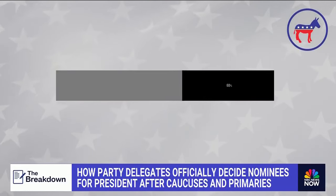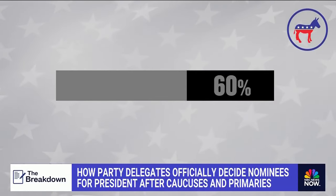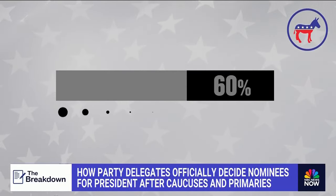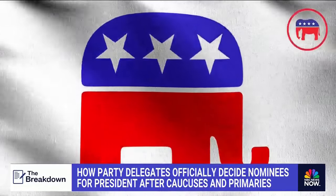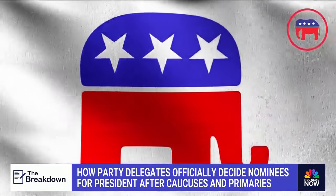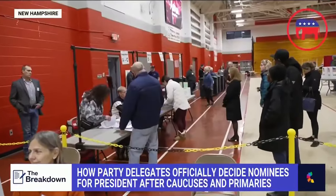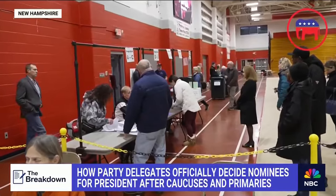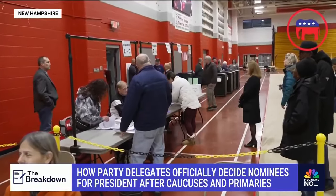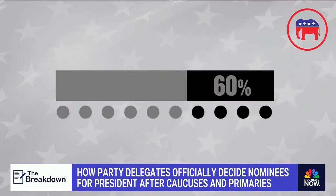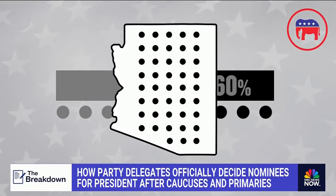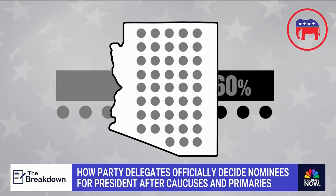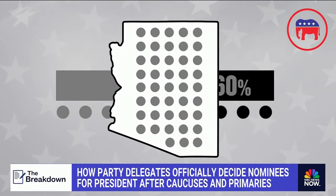So if a candidate gets 60 percent of the vote in a state, they'll get about 60 percent of the delegates. But Republicans have a few different methods: proportional, especially in early states like New Hampshire, or winner-take-all, where the candidate who gets the most votes gets all the delegates, like in Arizona.